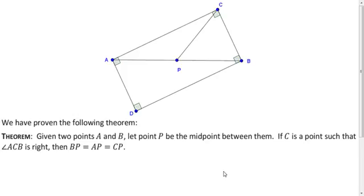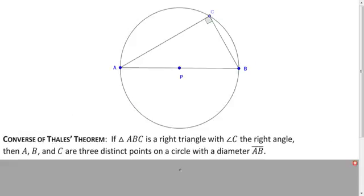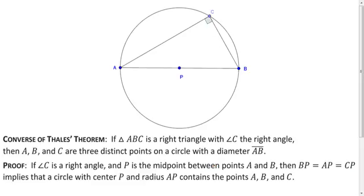So we just proved this little theorem by using our properties of rectangles. And we're going to use this to help us prove what is called the converse of Thales theorem, which is what we looked at in the first GeoGebra activity. So if we have a right triangle where C is the right angle, then these three points are points on a circle where AB is the diameter. So to prove that, we look at point P, which is the midpoint of AB, and we're going to connect that to C.